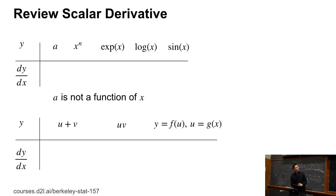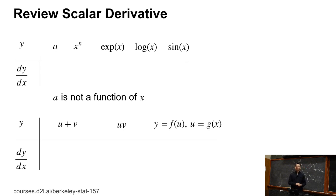Everybody should know scalar derivatives. Here y is a scalar and x is a scalar. Given y is a function of x, we compute dy over dx. If a is not a function of x, the result is 0.